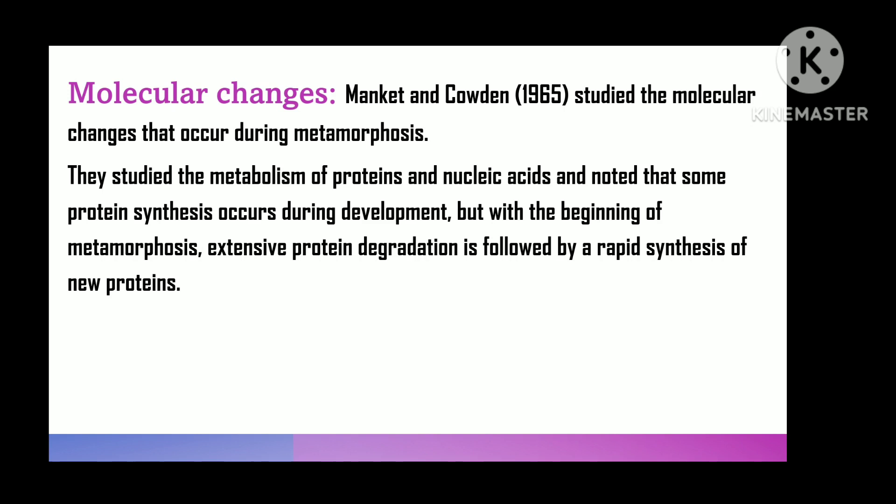Conclusion of retrogressive metamorphosis: as a result of retrogressive metamorphosis, the free-swimming, photopositive and geonegative ascidian tadpole larva changes into a fixed, inactive, geopositive and photonegative adult. The chordate characteristics of the larva — like notochord, nerve cord, and sense organs — are completely lost in the adult.